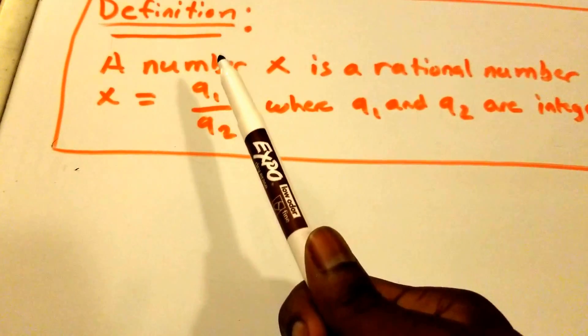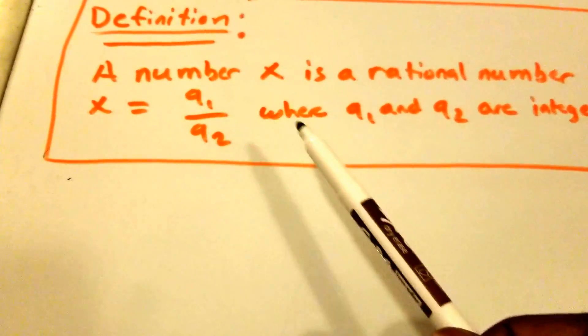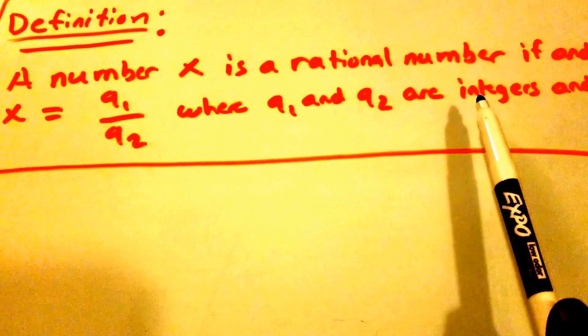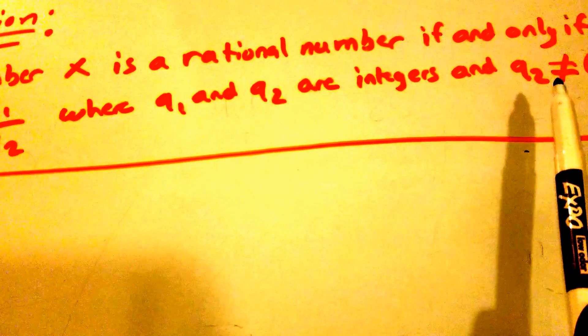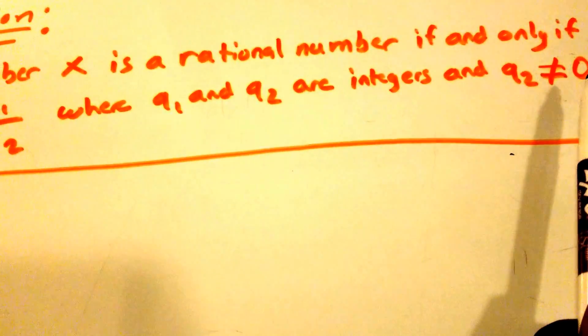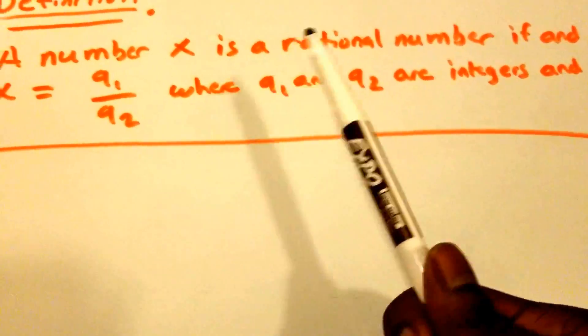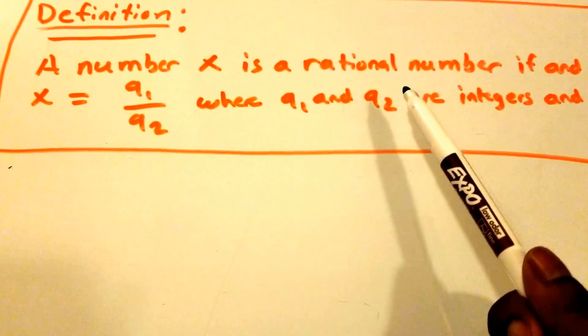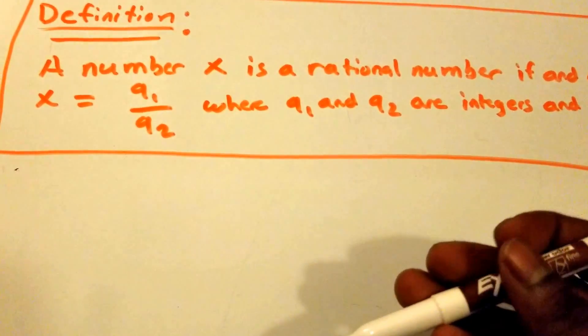So that's a Q and not a 9, just so you guys know. This is where q1 and q2 are both integers and where q2 does not equal 0. Of course I'm saying q1 and q2, that's q subscript 1 and q subscript 2, so I'll probably use them interchangeably throughout this proof.